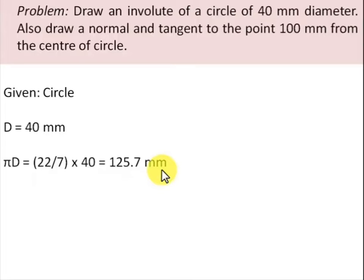Looking at the definition of an involute, we speak of winding or unwinding a piece of thread or string. No string length has been given in this problem, so we'll assume the string length equivalent to the circle's circumference, which has been worked out as 125.7mm. Let's start the construction process.